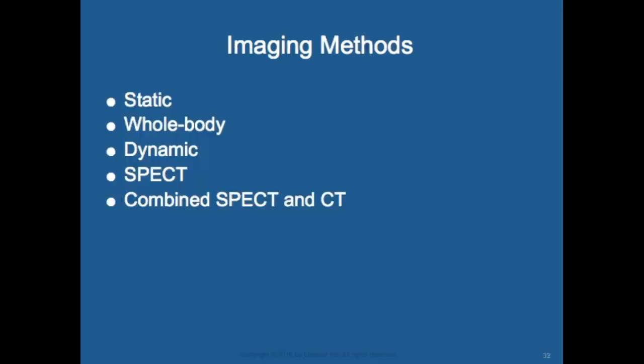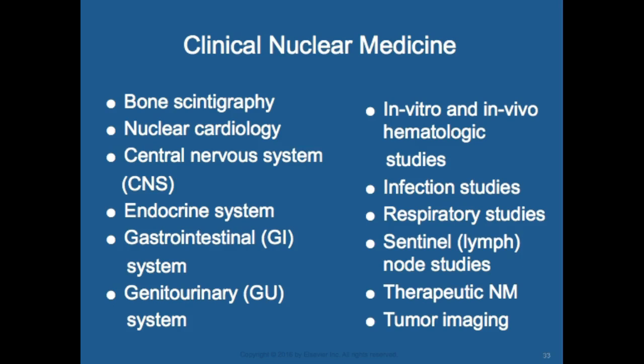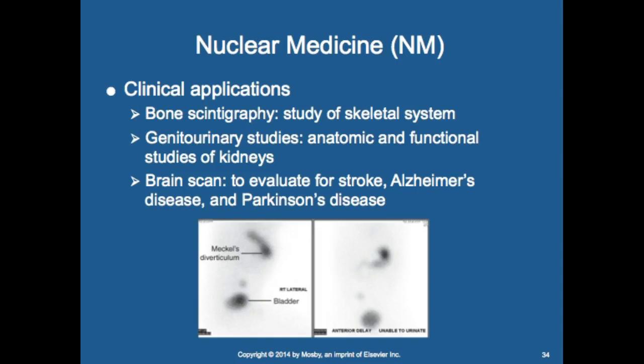Imaging methods include static, whole body, dynamic, SPECT, and combined SPECT/CT. Clinical applications cover bone, central nervous system, endocrine, and GU studies, among others. For the skeletal system, we study bone.